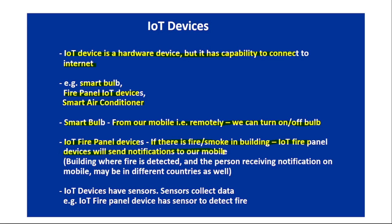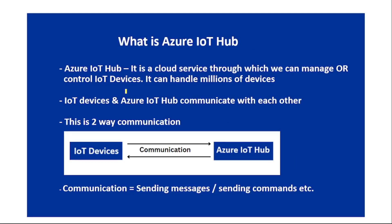In the case of IoT fire panel devices, if fire or smoke is detected in a building, those devices will send notifications to our mobile — via Azure IoT Hub. The building where fire is detected and the person receiving notifications on mobile may even be in different countries. That's the whole point of IoT. IoT devices have sensors that collect data; for example, fire panel devices have sensors to detect fire or smoke.